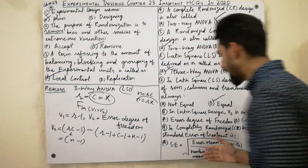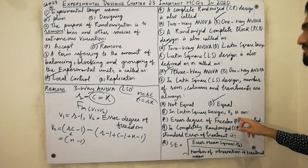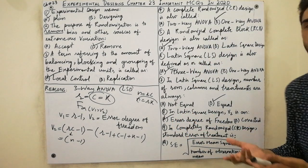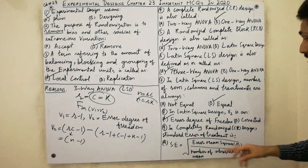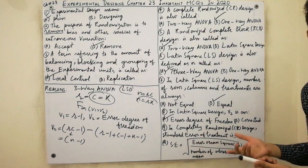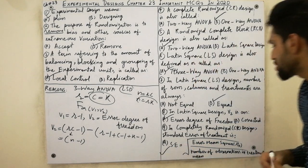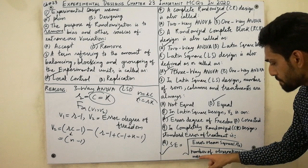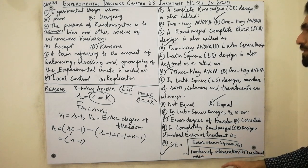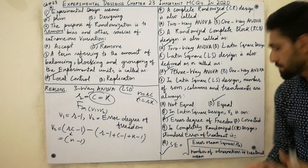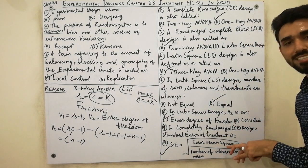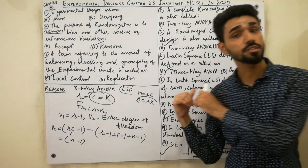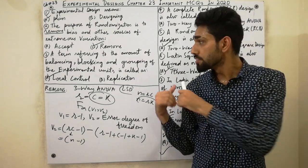In Latin Square Design, v2 is the error degree of freedom. Next, the ninth MCQ: in Completely Randomized Design, the standard error estimate is equal to the square root of s-squared-e divided by the number of observations in a treatment. Must remember this formula for standard error — square root of mean square error divided by number of observations per treatment.